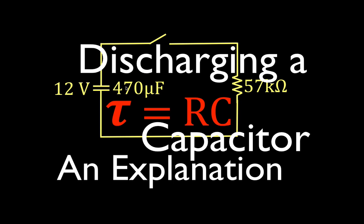This is the kind of circuit I'm going to be talking about in this video. We previously charged the capacitor with a 12-volt battery, so there's 12 volts across the capacitor. We had the 470 microfarad capacitor, so now we have a 470 microfarad capacitor with 12 volts across it. We're going to discharge that capacitor through this 57k ohm resistor.